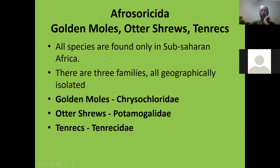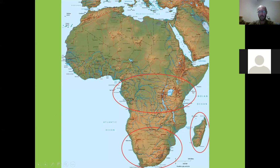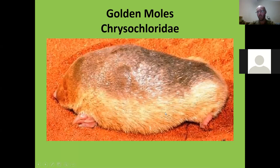There are three families, all geographically isolated: golden moles, limited to southern Africa; otter shrews, limited to central Africa; and tenrecs, found only in Madagascar. Golden moles are in no way related to true moles, which come from North America, Europe, and Asia — they just happen to look very similar. In many ways they actually look more similar to the Australian marsupial moles.